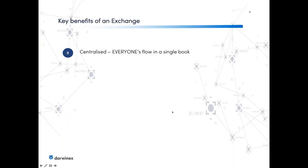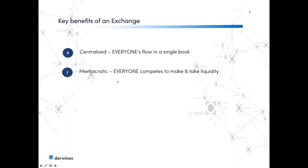What are the key benefits of an exchange? First, it's centralized — everyone's flow, whether limit orders or market orders that hit them, is centralized in a single matching book so liquidity doesn't get fragmented into parallel universes. Second, it's meritocratic — democratic in the sense that everyone can enter and all compete to make and take the liquidity. No one is restricted to just being a taker or just being a maker.